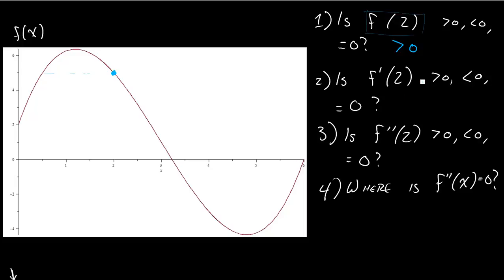Now, f prime of 2 — that's not asking me the same thing. That's asking me about the slope of f at 2. The slope of f at 2: if I draw a tangent line here, I can see that this tangent line has a negative slope. So f prime of 2 is going to be less than 0.